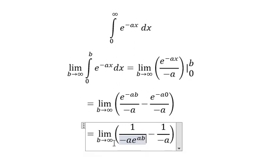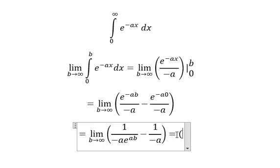So when b goes to positive infinity, this will go to infinity, so we have 1 divided by infinity. When a is positive, this term goes to 0, and now we just have this term remaining.